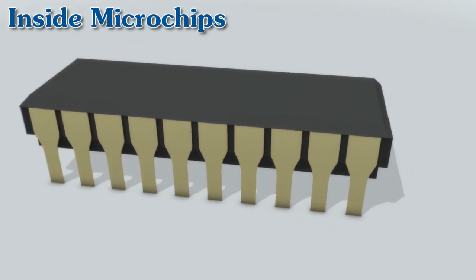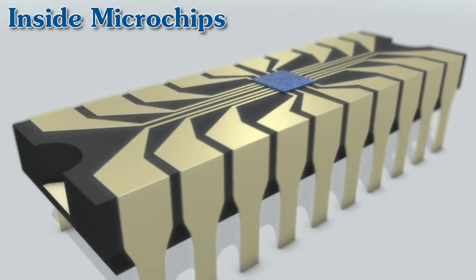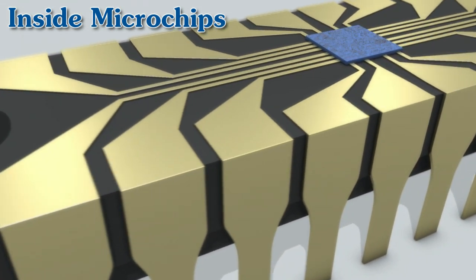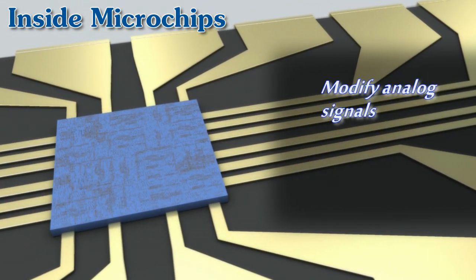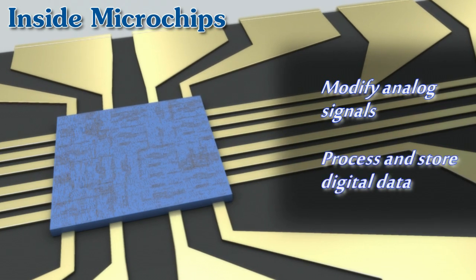A microchip is protected within a case shielding connection pins going to and from the circuit board the chip is attached to. Microchips are generally used to modify analog signals or process and store digital data.